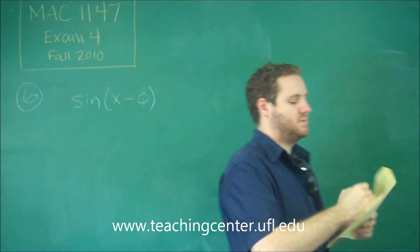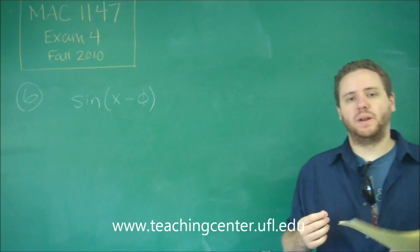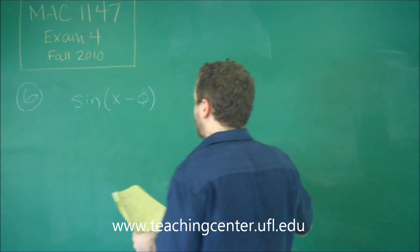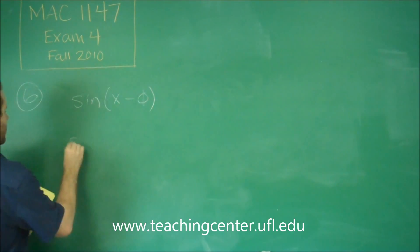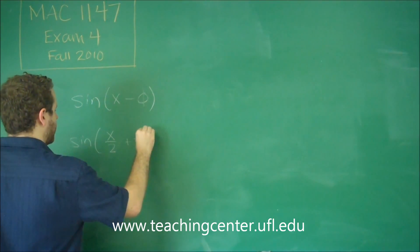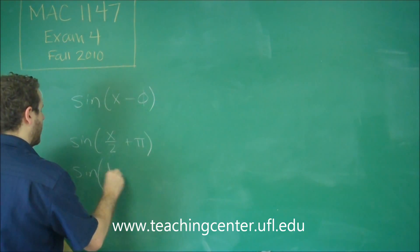So what we need to do here is we have to factor out the one-half so that we actually can get just X minus the term. So our function here, X over 2 plus pi, the problem here is that this is X over 2, not X. But we can fix that by factoring out one-half.